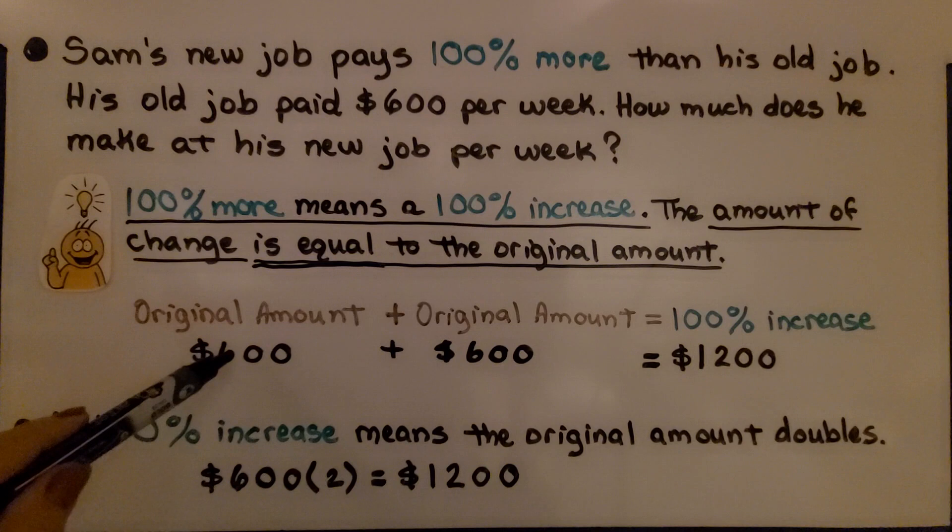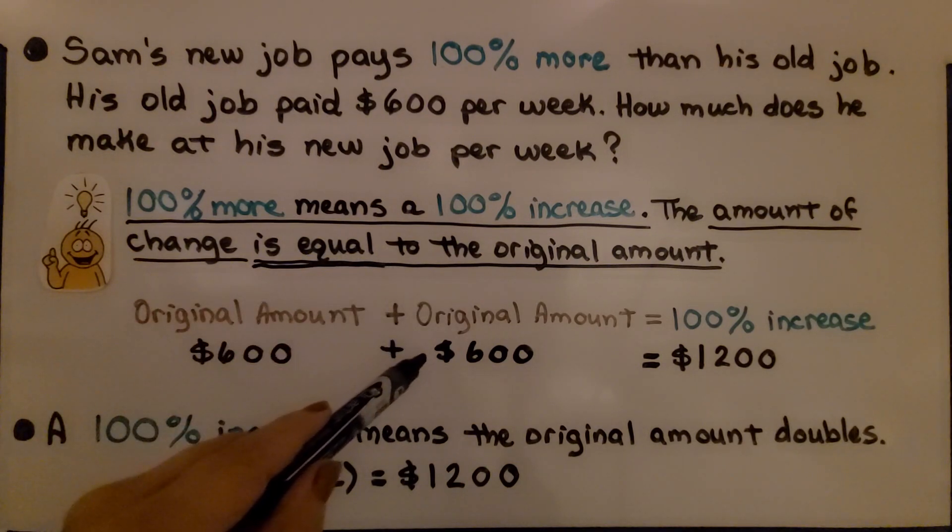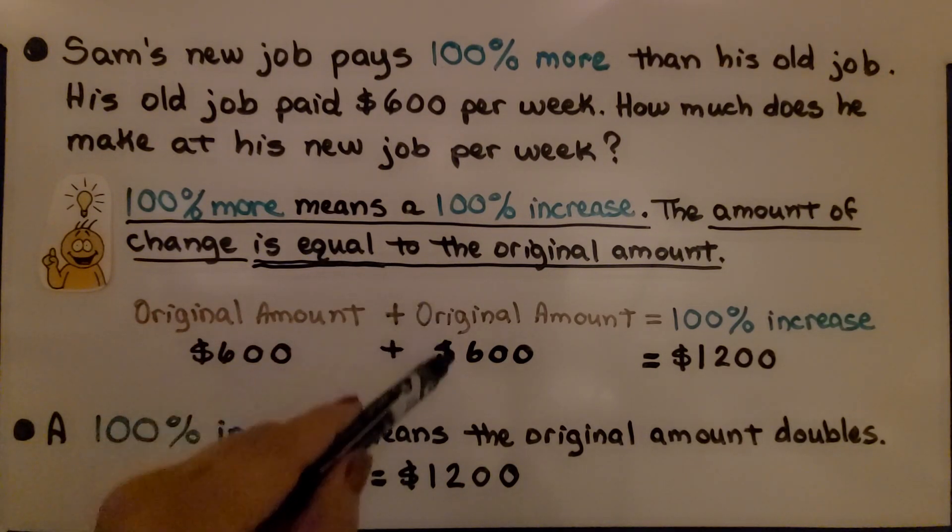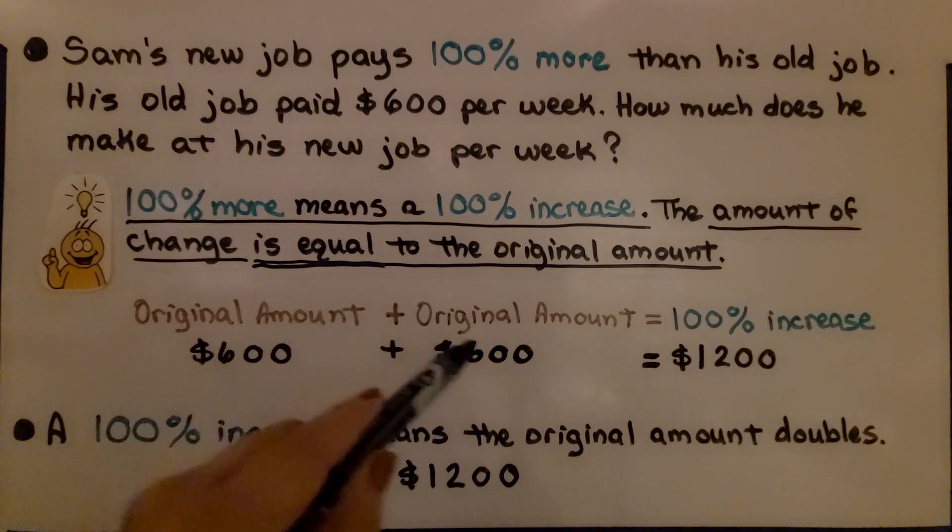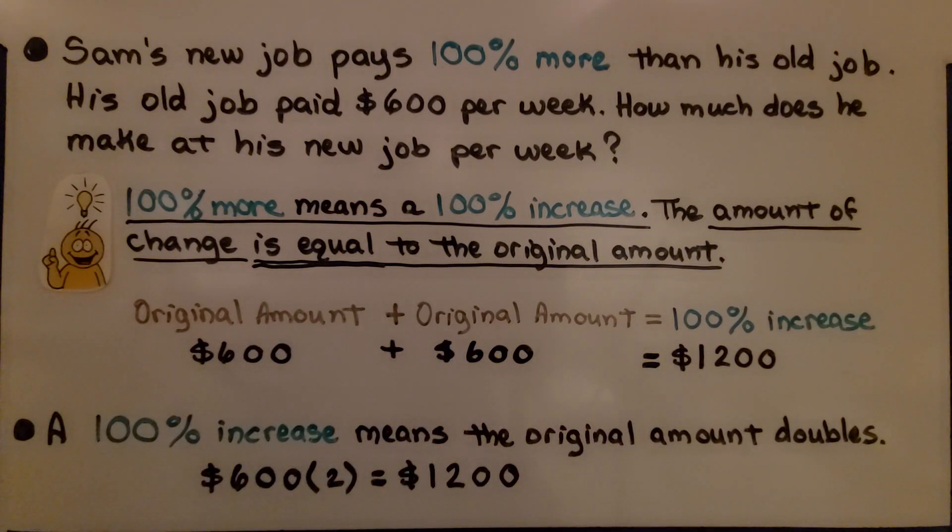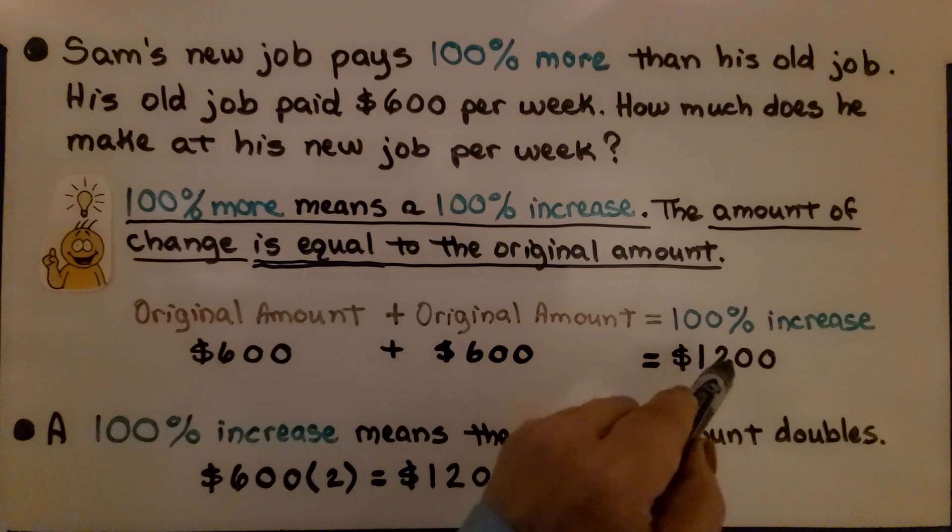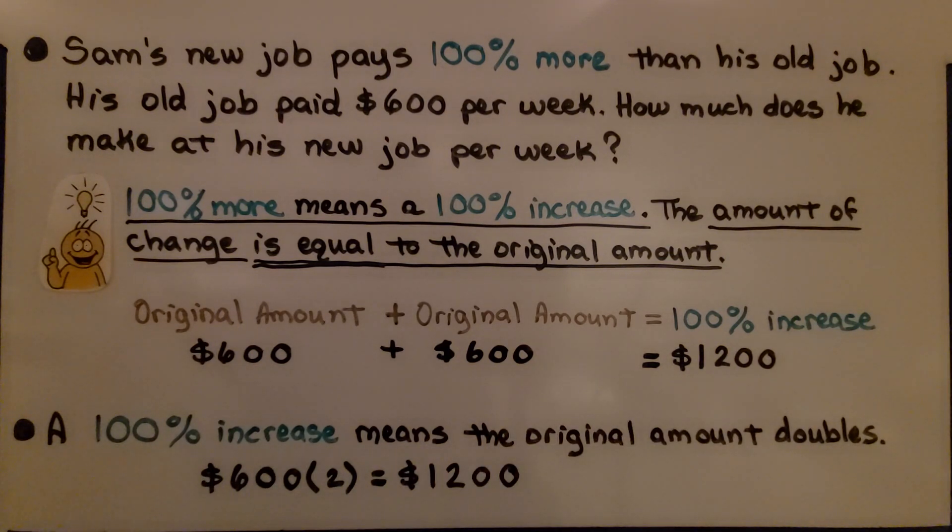The original amount was $600, and we're going to add another $600. That means a 100% increase, he is making $1,200 per week. A 100% increase means the original amount doubles, so we could do $600 times 2. That would be $1,200.